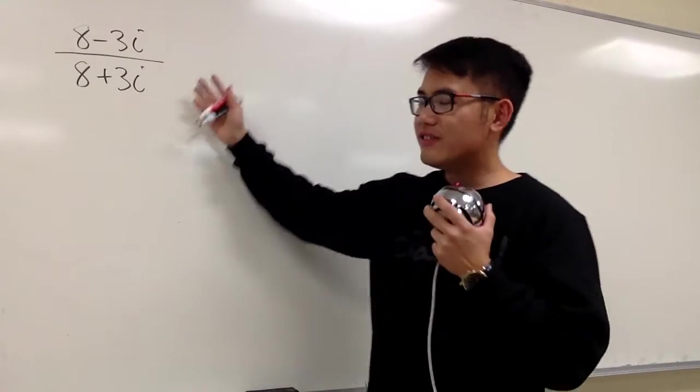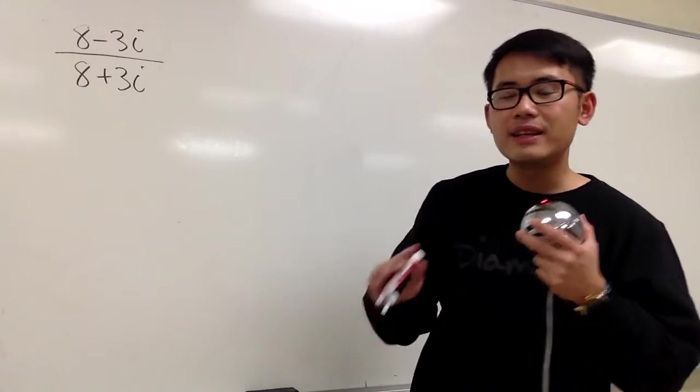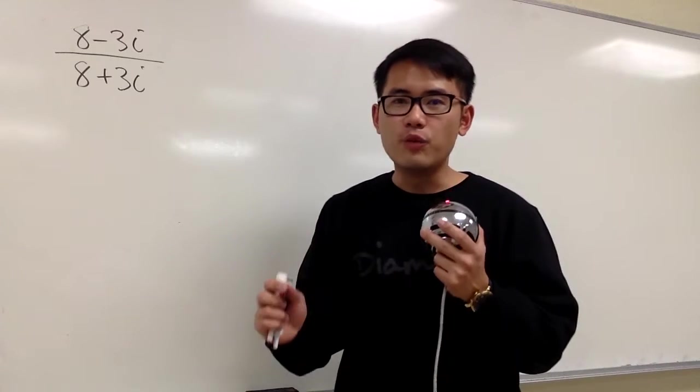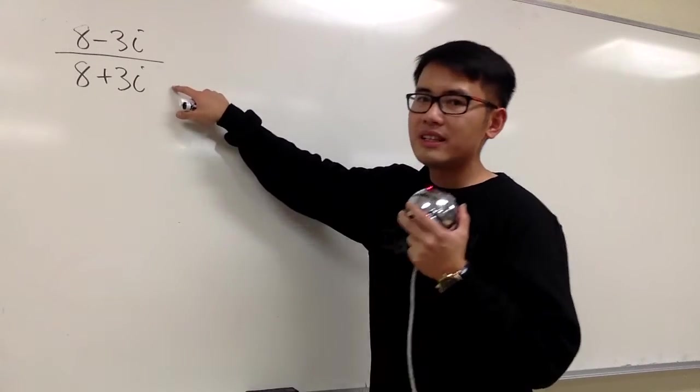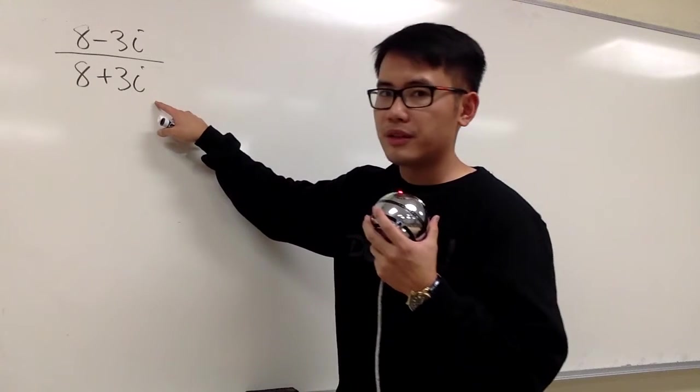Okay, we are going to work this out. We are dividing complex numbers, and at the end, we have to make sure that our answer is in the form of a plus bi. And whenever we are dividing complex numbers, we are going to pay attention to the denominator first.